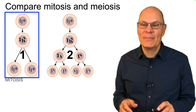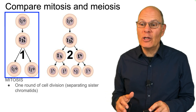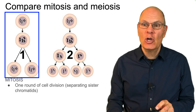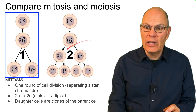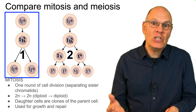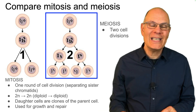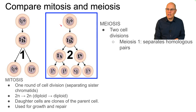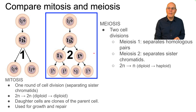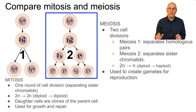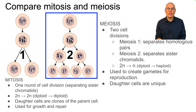Compare mitosis and meiosis. Mitosis consists of one round of cell division that separates the sister chromatids; cells begin as diploid and end as diploid. The daughter cells are clones of the parent cell, and it's used for growth and repair. Meiosis consists of two cell divisions: meiosis one separates homologous pairs, meiosis two separates sister chromatids. We go from diploid to haploid. It's used to create gametes for reproduction, it introduces variation, and the daughter cells are unique.